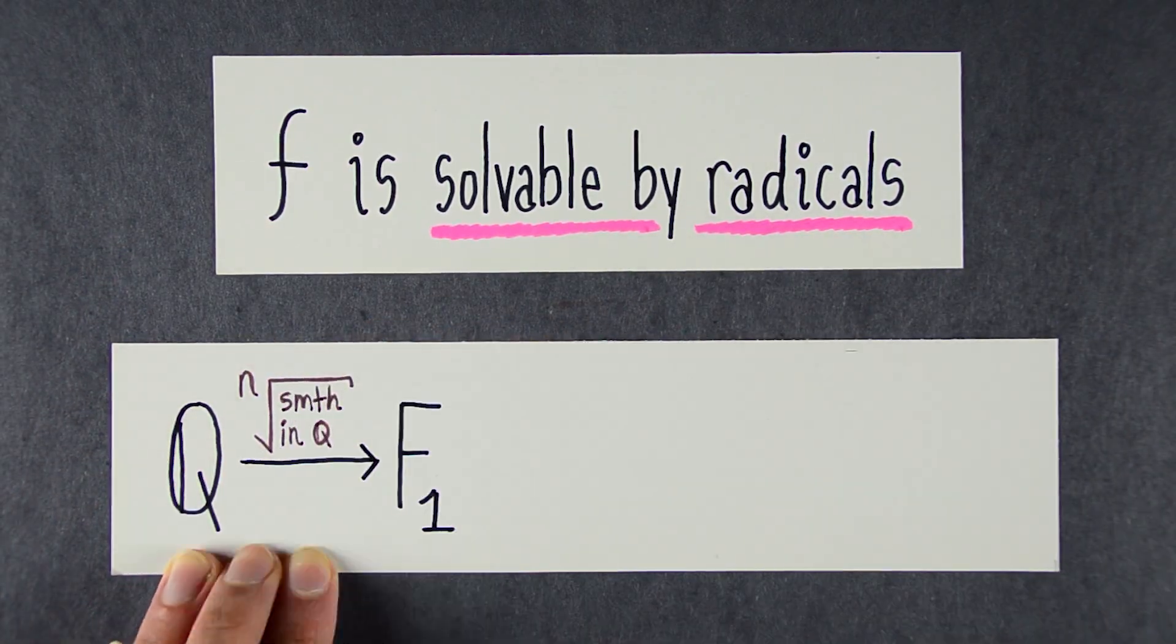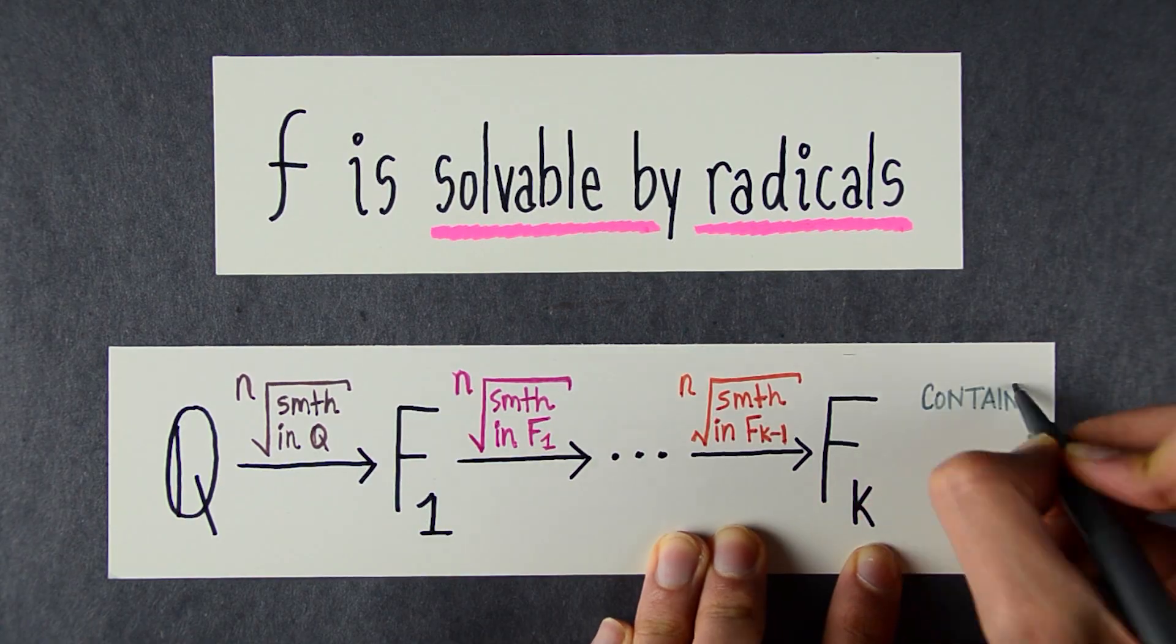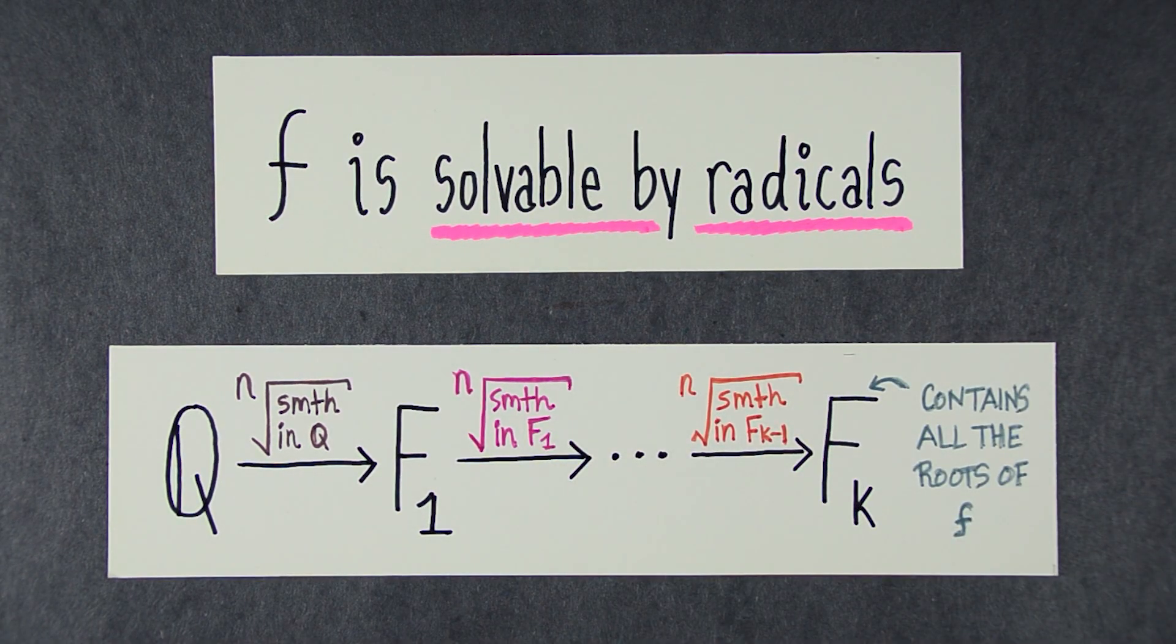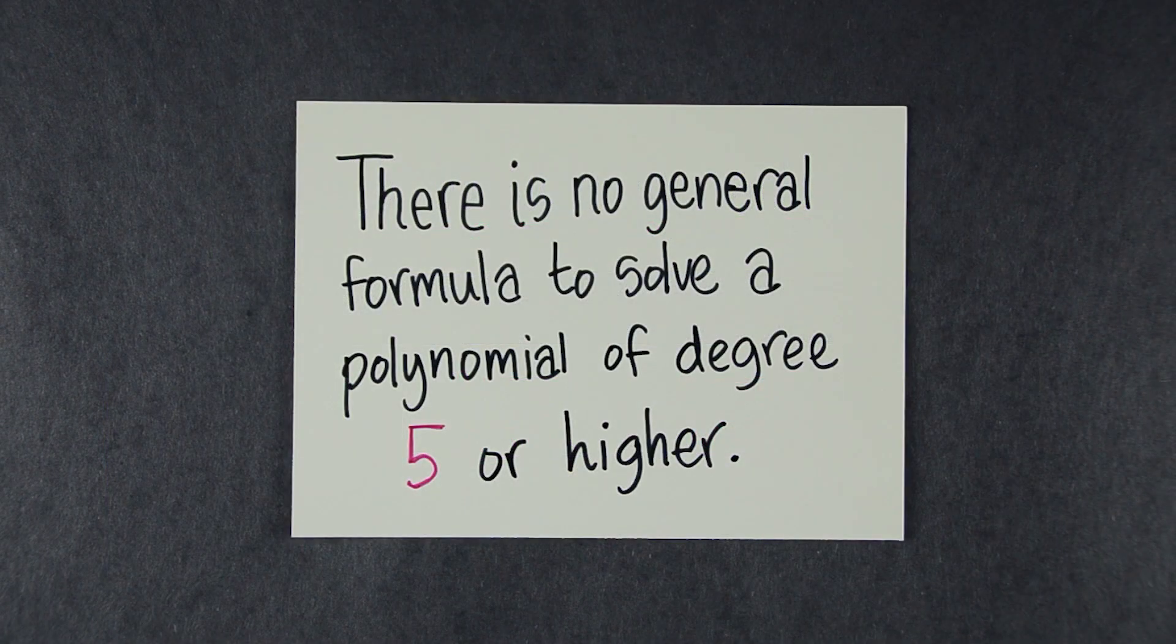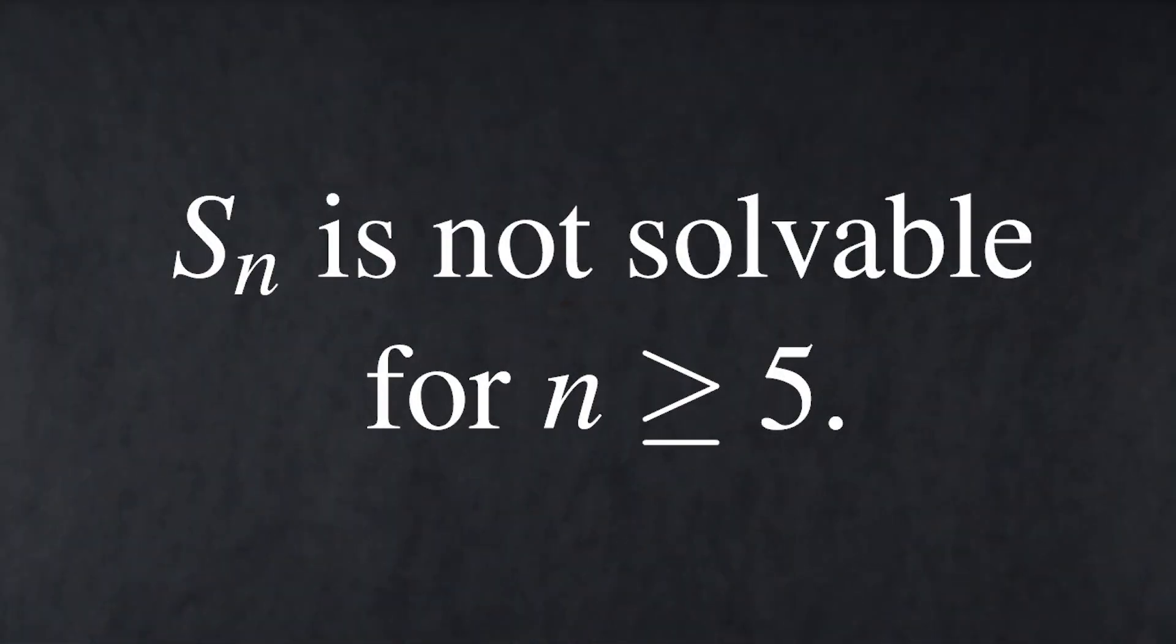It's an end because it's normally introduced at the end of a course in abstract algebra, once all the groundwork has been laid. The theorem we'll be building up to is the following: There is no general formula to solve a polynomial of degree 5 or higher.